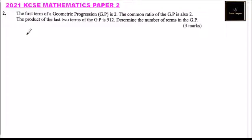Question number two: we are told the first term of a geometric progression GP is 2, so a is 2. The common ratio of the GP is also 2, so r equals 2.